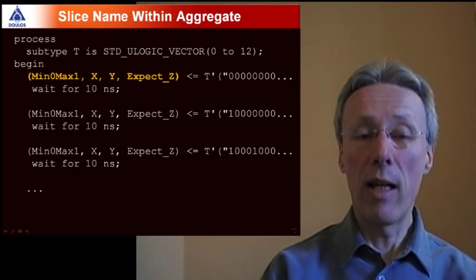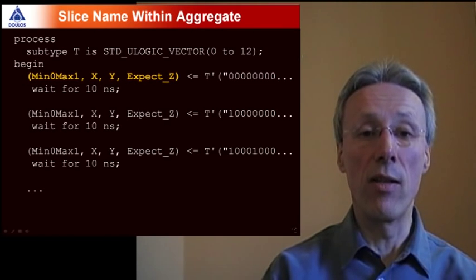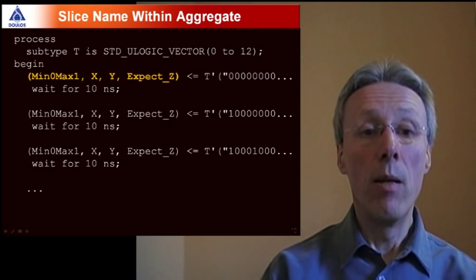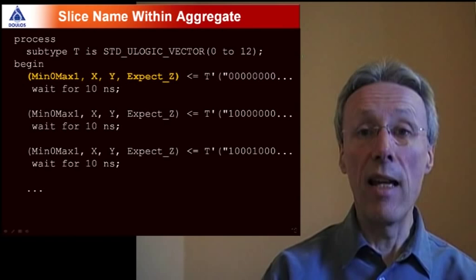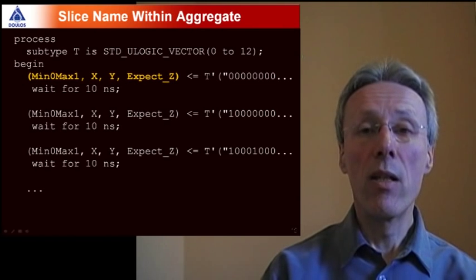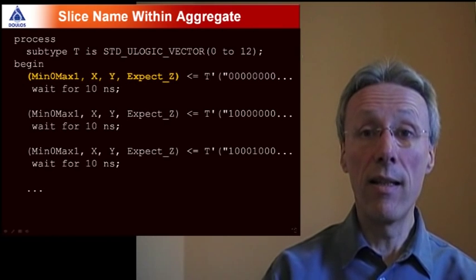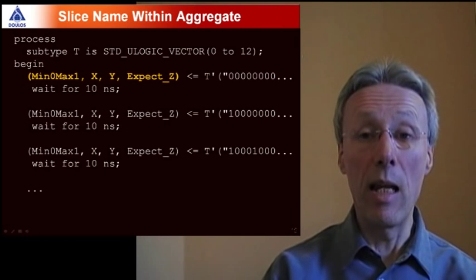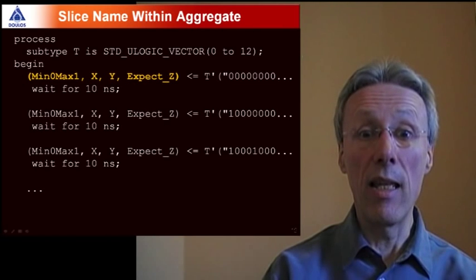Now this may look like familiar VHDL code but it turns out it wouldn't work prior to VHDL 2008 because the values that we're using to build up this aggregate are actually a mixture of scalar values and vector values. Min zero max one is a scalar standard logic value. X, Y and expect Z are each vectors. So what we're trying to do in effect is to build up an aggregate from a mixture of scalars and vectors. In other words we're taking both scalar values and slice names to build up our aggregate. And in VHDL 2008 you can do exactly that as shown here. In this case using positional association to build the aggregate.